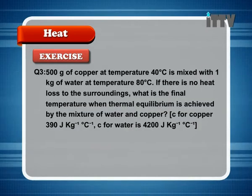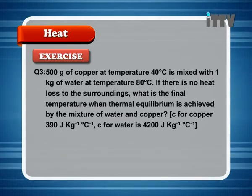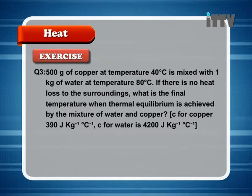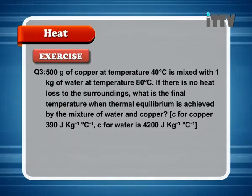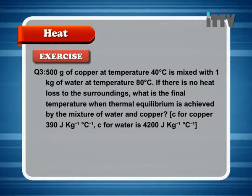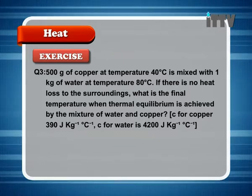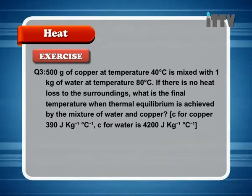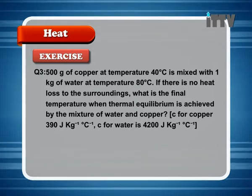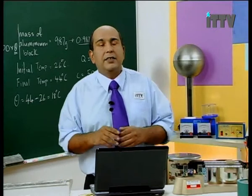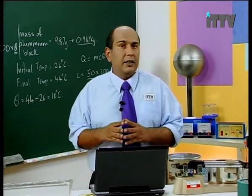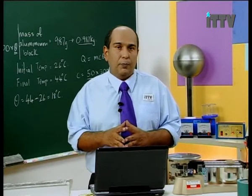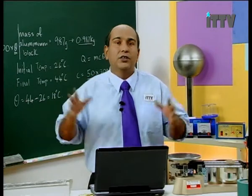Next question: 500 grams of copper at 40 degrees Celsius is mixed with 1 kilogram of water at 80 degrees Celsius. If there is no heat loss to the surroundings, what is the final temperature when thermal equilibrium is achieved? Specific heat capacity for copper: 390 J kg⁻¹ °C⁻¹, and for water: 4,200 J kg⁻¹ °C⁻¹. This is a typical calculation where heat lost by the water equals heat gained by the copper block.